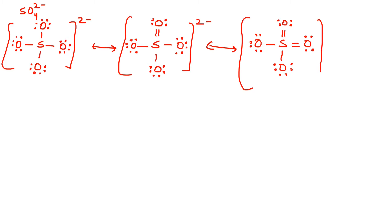A third structure for sulfate has sulfur with double bonds to two oxygens and single bonds to the other two oxygens. The doubly-bonded oxygens have two unshared electron pairs and the singly-bonded oxygens have three unshared pairs, with the whole structure carrying a two-negative charge. These three structures are non-equivalent because sulfur has different bonding in each: four single bonds, one double and three single bonds, or two double and two single bonds.